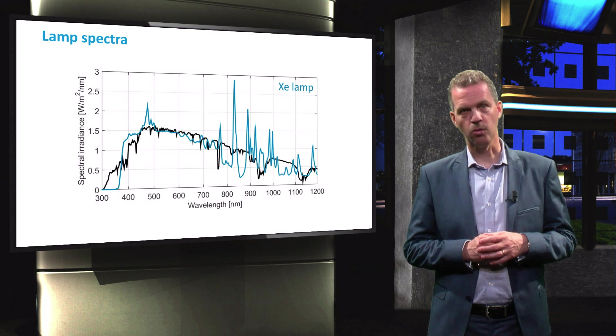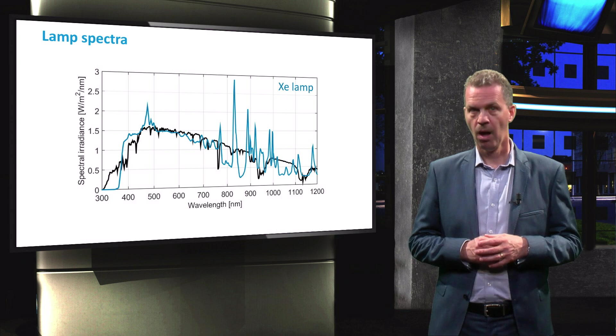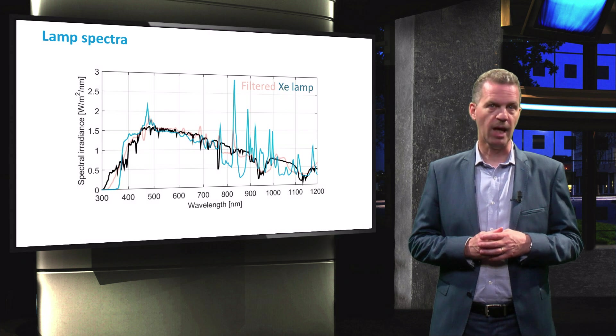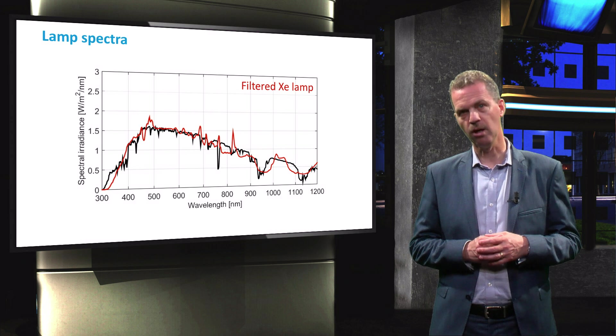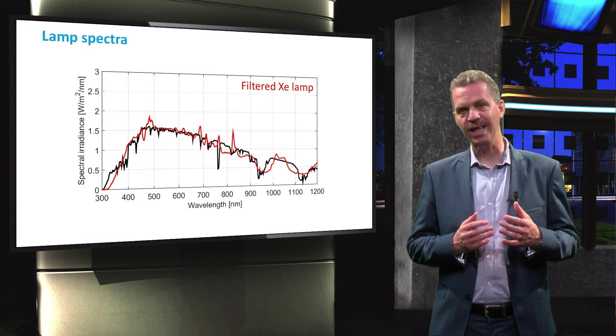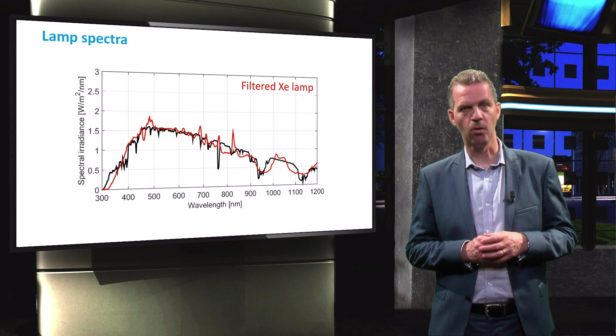Typically, the light source is a xenon arc lamp. By modifying the xenon lamp using certain filters to remove the high intensity emission lines in the infrared region, it simulates the solar spectrum more accurately.